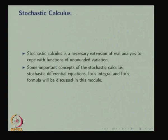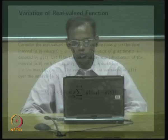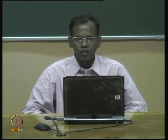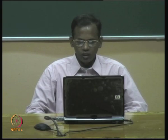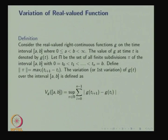In the next lecture, we are going to discuss Itô's formula and some important stochastic differential equations and their solutions. First, we are going to discuss the variations of real-valued functions. Our interest is to study the variation of Brownian motion, but before that we will discuss the variations of real-valued functions, and then the variations of Brownian motion.